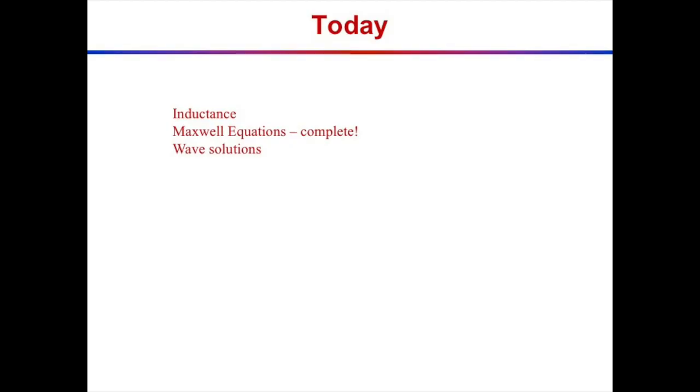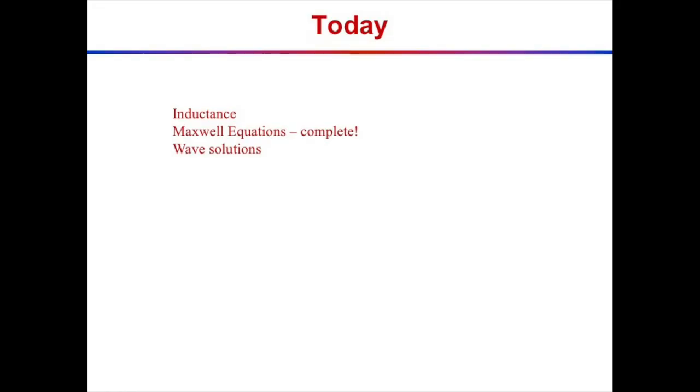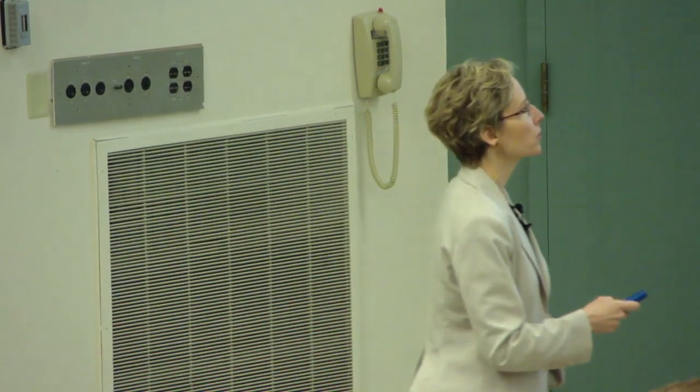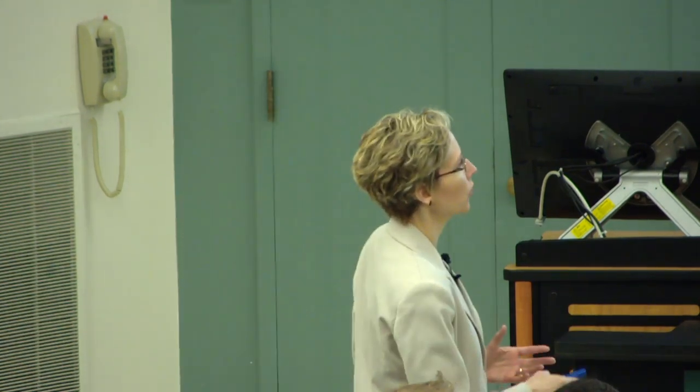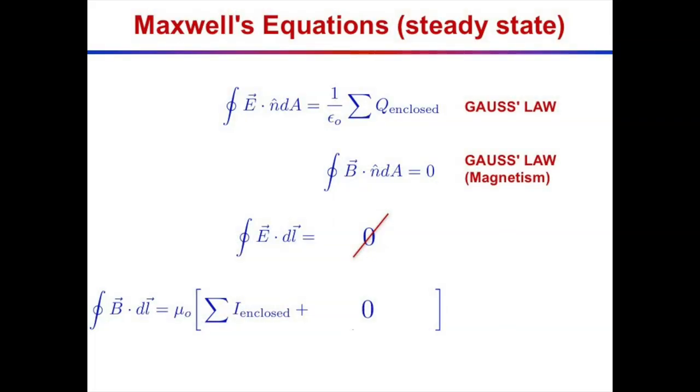Last time we discussed Faraday's law. This time we're going to get to the entire complete set of Maxwell's equations - everything that governs electricity and magnetism. And if we have time, I'll show you the wave solution. Here's what we had for the time-independent pieces of Maxwell's equations - the steady state case where charges could be moving at constant velocity, reported as a constant current.